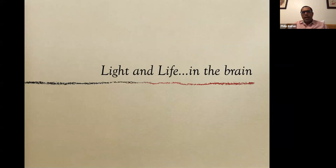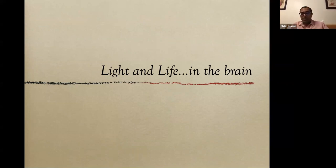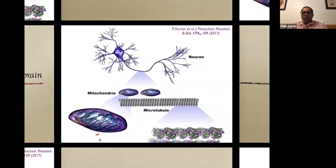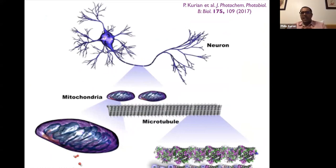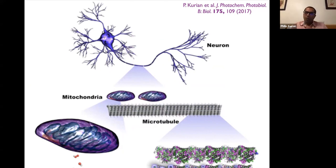In 1932, Niels Bohr gave a lecture on 'Light and Life,' and we're going to take the idea of how light stimuli or external photonic stimuli affect living processes, specifically in the brain. We have a working picture of this intimate nexus between the mitochondrial reticula and the cytoskeleton — composed of actin filaments, intermediate filaments, and microtubules — and in this dynamism we think of biophotons potentially being emitted from free radicals emitted from mitochondria.